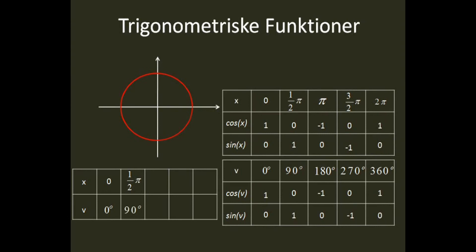Radiantallet pi er identisk med 180 grader. Radiantallet 3pi/2 er identisk med 270 grader. Radiantallet 2pi er identisk med 360 grader.